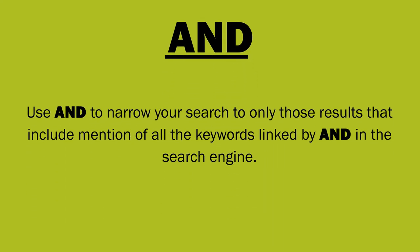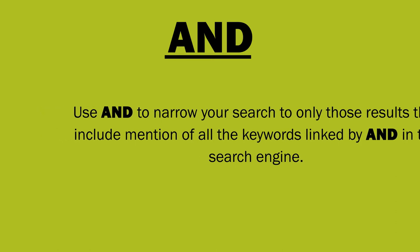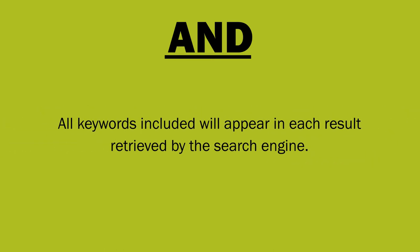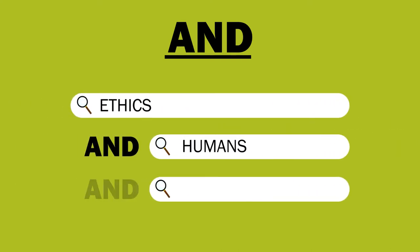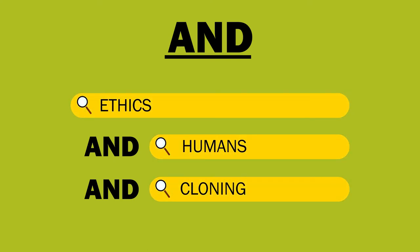Let's start with AND. Use AND to narrow your search to only those results that include mention of all keywords linked by AND in the search engine. All keywords included will appear in each result retrieved. For example, you may run a search that looks like this: ethics AND humans AND cloning. The search engine now knows to retrieve only results that have all three keywords: ethics, humans, and cloning.